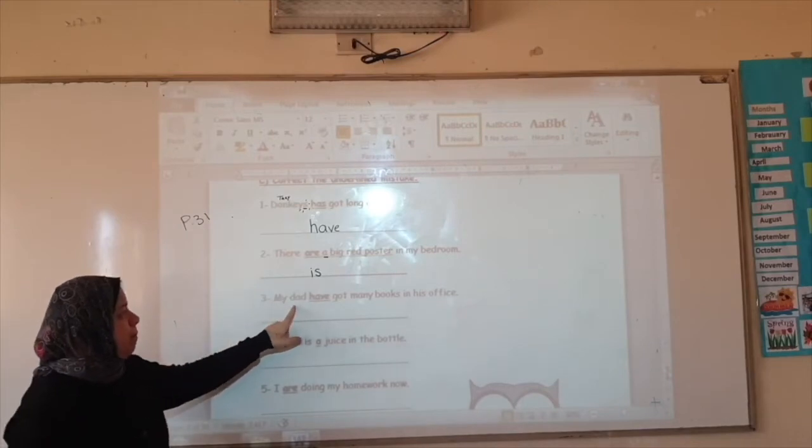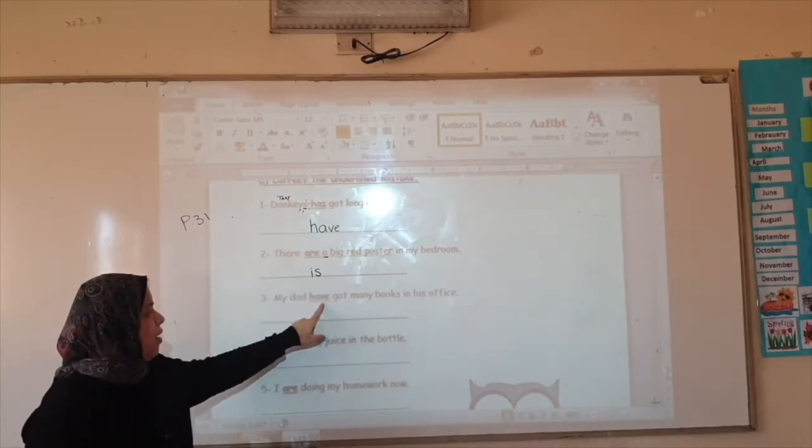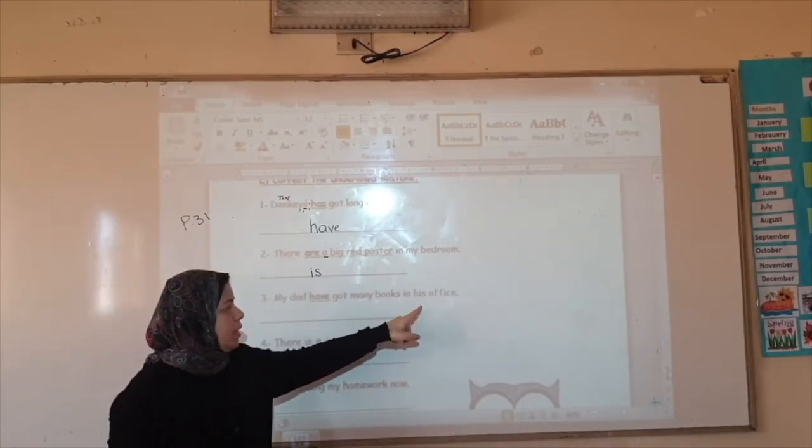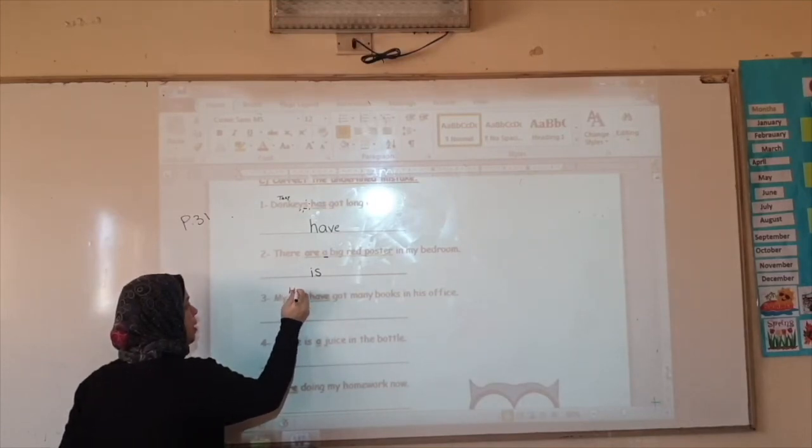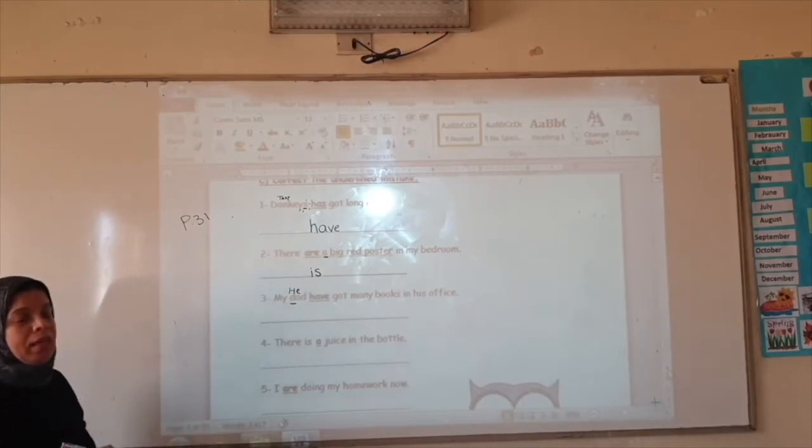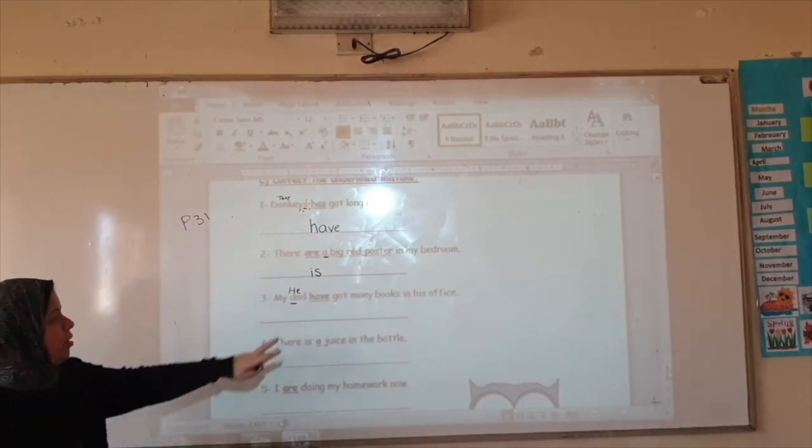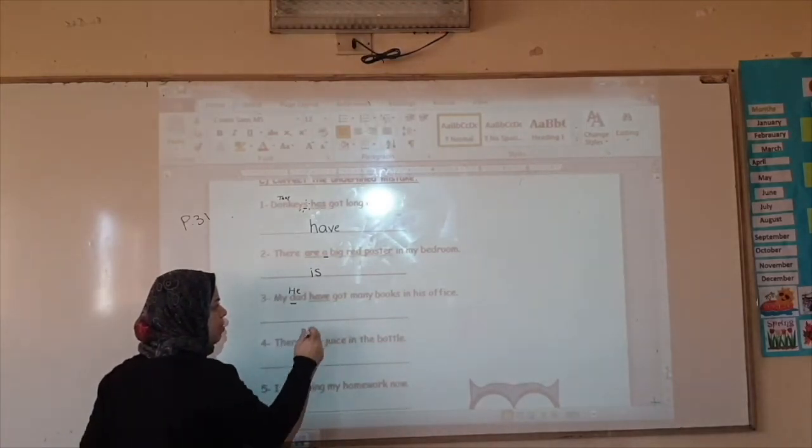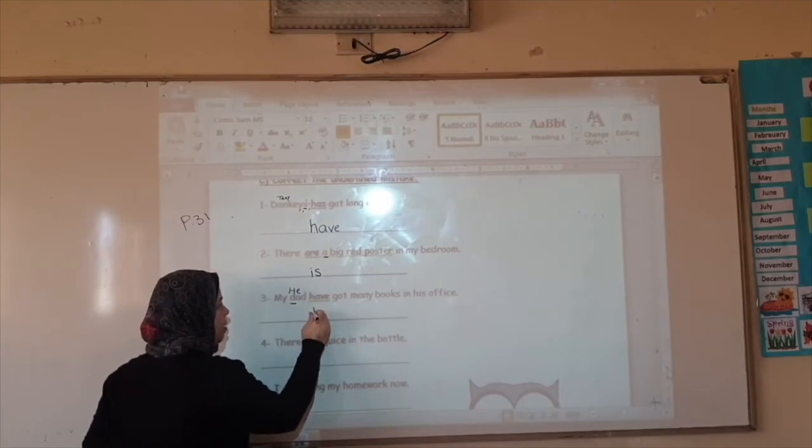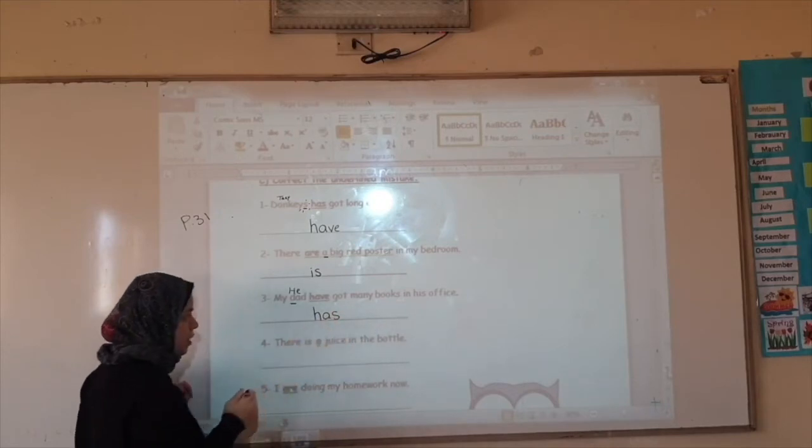Number three. My dad has got many looks in his eyes. My dad, instead of my dad I'm going to use he. What do I use for he? Have or has? This is a mistake, so this is not correct. I'm going to correct the mistake. So I'm going to write has instead of have.